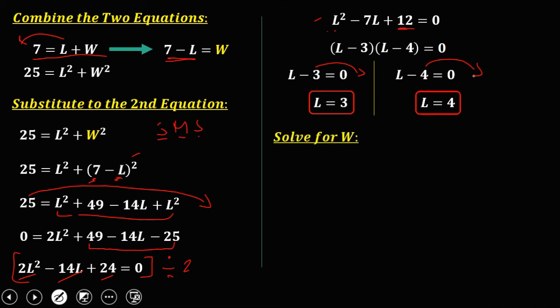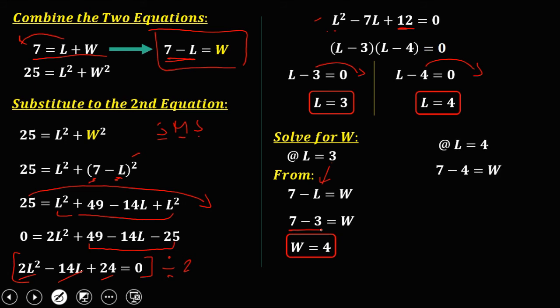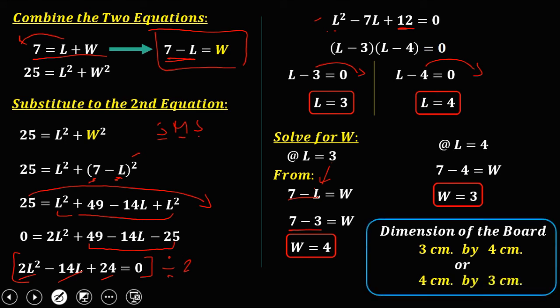Then to solve for W or the width. Now at L equals 3, from this equation, substitute your L, so 7 minus 3 equals W, so 7 minus 3. Therefore, W is equal to 4. And if L equals 4, the same equation. So substitute, so 7 minus 4, so W is equal to 3. So therefore, the dimension of the board, that's 3 cm by 4 cm or 4 cm by 3 cm.